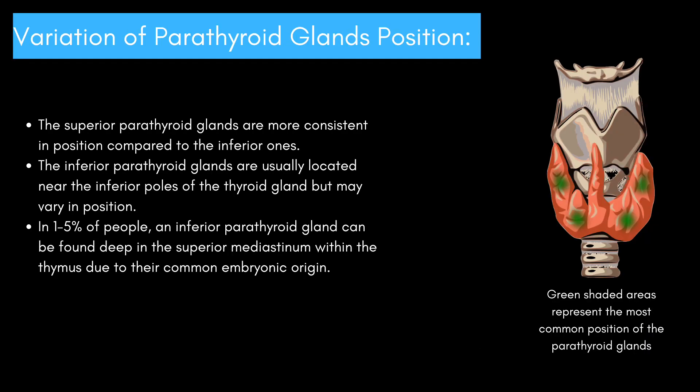Let's next take a look at the variation of parathyroid gland position. The superior parathyroid glands are more consistent in position compared to the inferior ones. The inferior parathyroid glands are usually located near the inferior poles of the thyroid gland, but may vary in position. In 1% to 5% of people, an inferior parathyroid gland can be found deep in the superior mediastinum within the thymus, due to their common embryonic origin.